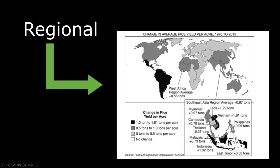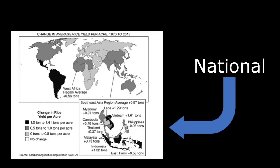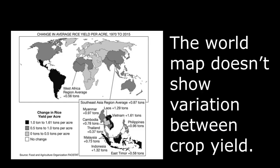We have West Africa on the left, and we can say this is North Africa — we can compare data per region and note they have around the same change. Now the bottom map is looking at a regional scale focused on Southeast Asia, but we're comparing data per country, which means it's a national scale of analysis. Southeast Asia on the world map looks gray, but we can see countries like Vietnam and Indonesia are very dark. This is because the world map doesn't show variation between the data — it averages all countries inside that region.